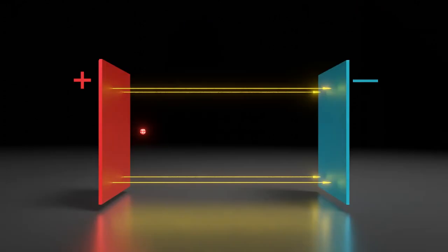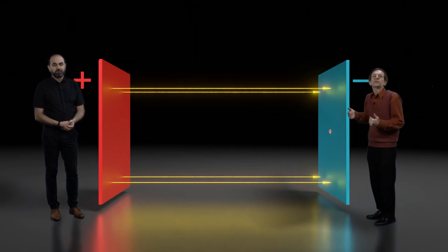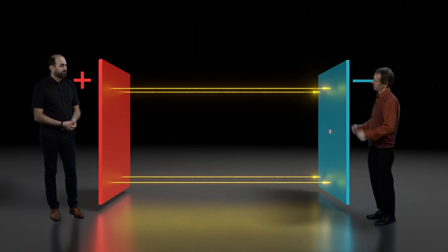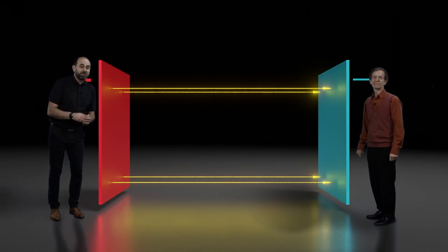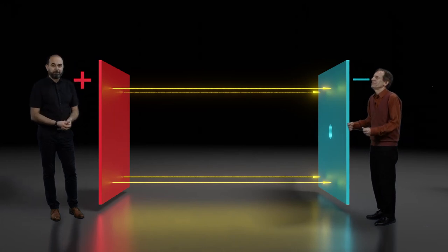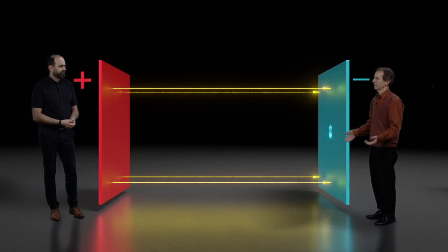Well done! The proton accelerates toward the negative electrode. Unfortunately, our accelerated proton hit the electrode and got stuck in it. Meanwhile, we promised it to physicists waiting in the next laboratory. Let's make a small hole in this electrode through which the accelerated proton can fly further. But it will still turn toward this electrode because it attracts it. Did you shoot with a slingshot as a child?